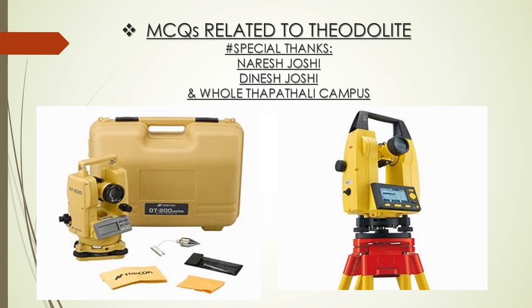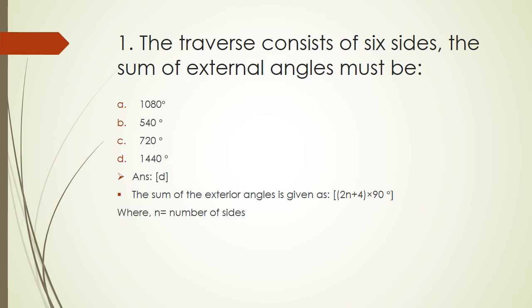Hello friends, welcome to our YouTube channel Better Way of Learning. Today I am here again with the MCQs related to theodolite. Our first question goes like this: The traverse consists of six sides, the sum of the external angles must be: 1080 degrees, 540 degrees, 720 degrees, or 1440 degrees.